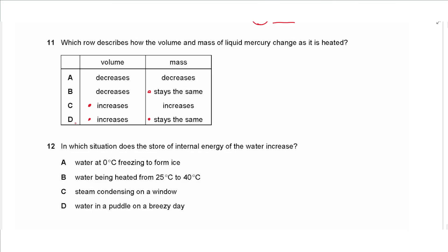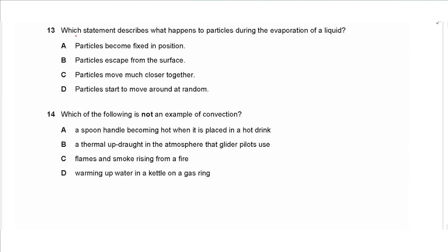Question 11 says which row describes how the volume and mass of liquid mercury change as it is heated. So heating increases the volume and the mass stays the same. It does not change when temperature changes, so we choose D. Question 12 says in which situation does the store of internal energy of water increases. So water at zero degrees Celsius freezing, that's a decrease in internal energy. Water being heated from 25 to 40 degrees Celsius, yes. Steam condensing, that requires loss of energy. Water in a puddle on a breezy day, that will evaporate and the temperature will decrease. So again no, so the answer is B.